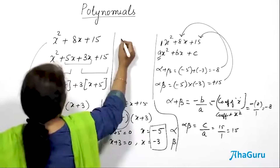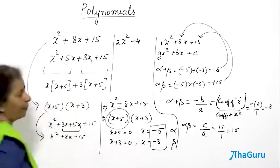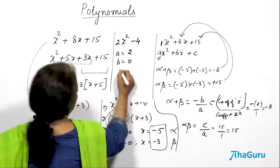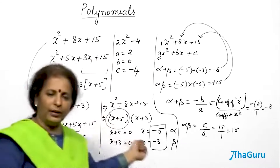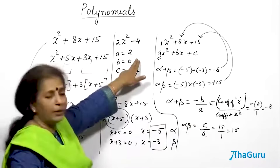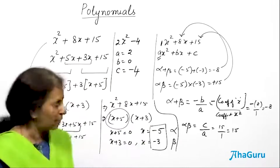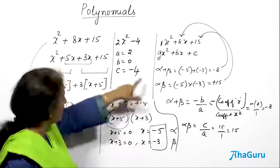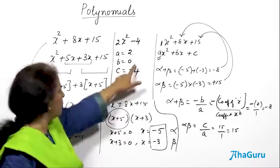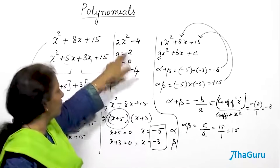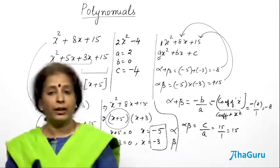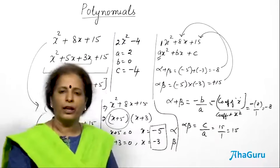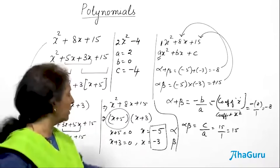Suppose you have a polynomial of the type x² - 4. Where is B? It is not there, but we can take B as 0. So A = 1, B = 0, C = -4. Alpha + beta = -B/A = 0, meaning the sum of the roots is 0, so the roots are opposite to each other — one positive and one negative. The product of the roots is C/A = -4 divided by 1.